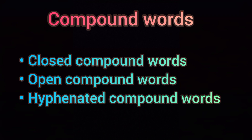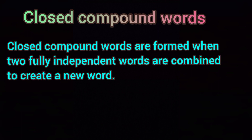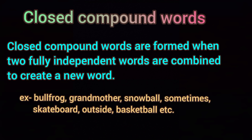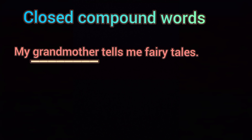First we shall see closed compound words. Closed compound words are formed when two fully independent words are combined to create a new word. For example: bullfrog, grandmother, snowball, skateboard, outside, basketball. In the sentence 'My grandmother tells me fairy tales,' the word grandmother is a closed compound word formed from 'grand' and 'mother.'